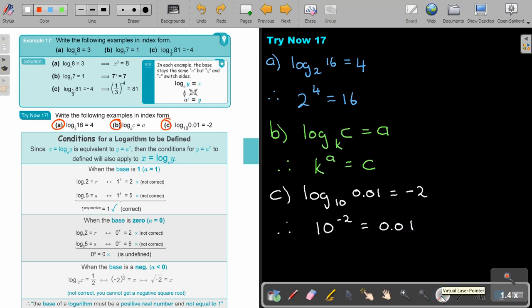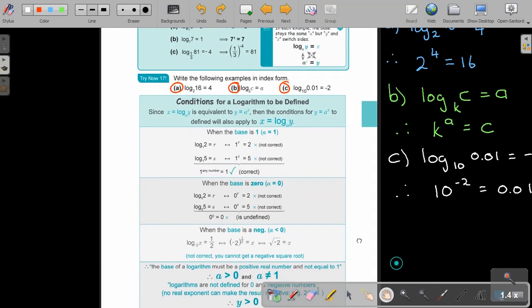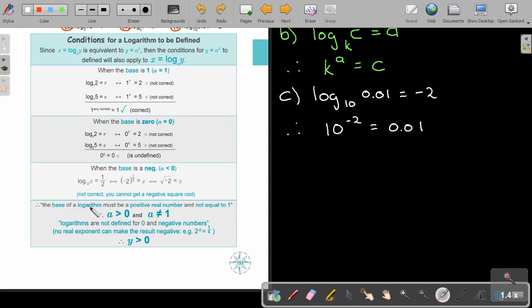I just want to show you finally this, the condition for a logarithm to be defined. So very important. When the base is 1 and you swap, you get this answer, which is not correct. Because 1 to the power of any number must be 1. So the base cannot be a 1. When the base is 0, 0 to the power 0 is also not defined. So it can also not be 0. Cannot be 1, cannot be 0. If the base is negative 2, then you go to index, you get this. But this half means a root and you cannot get a negative root. So the base of a logarithm must be a positive real number and not be 1. So it cannot be negative, it cannot be 1. So it must be bigger than 0, but it cannot be 1. Logarithms are not defined for 0 and negative numbers. That is very important.